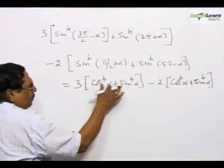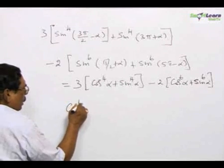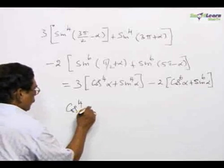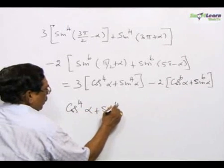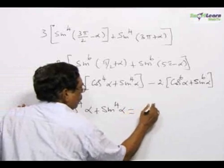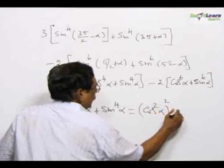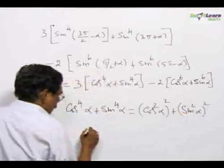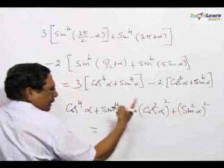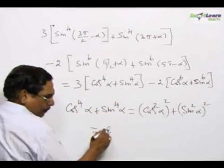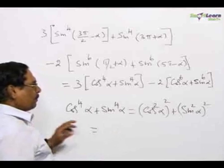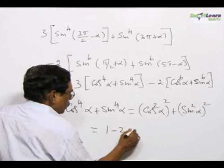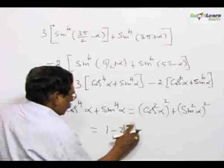I will show you how this could be simplified. That is cos power 4 α plus sin power 4 α, which equals (cos² α)² + (sin² α)². Using a² + b² = (a + b)² − 2ab, this becomes (cos² α + sin² α)² − 2cos² α · sin² α, which equals 1 − 2cos² α · sin² α.